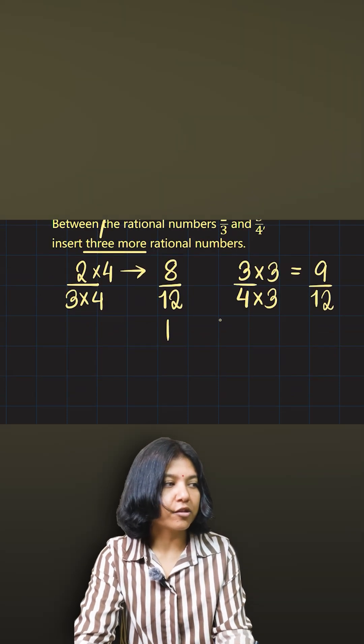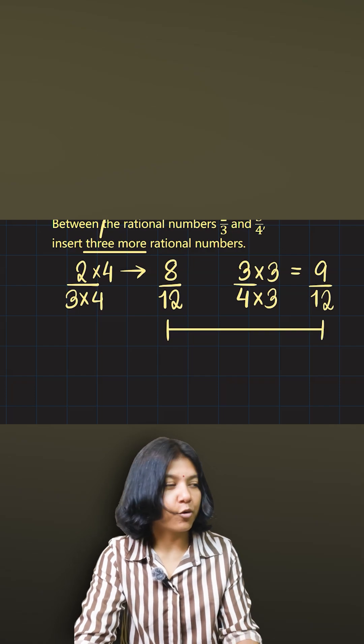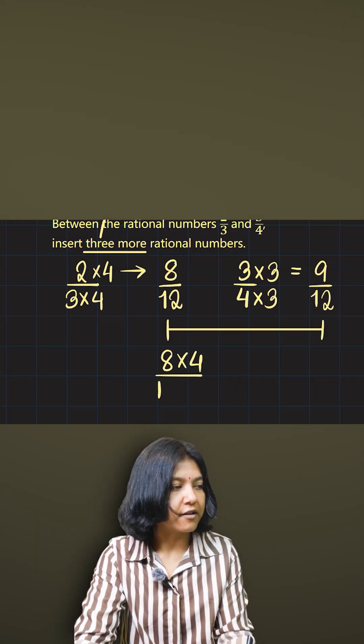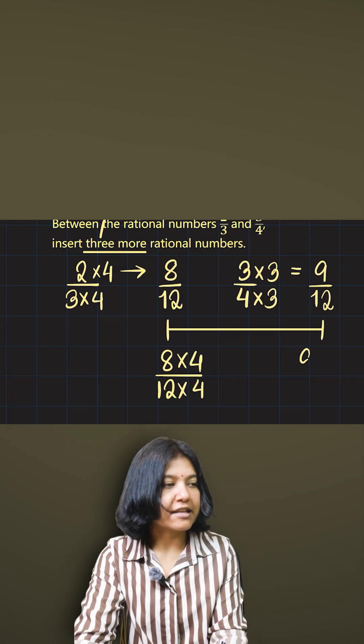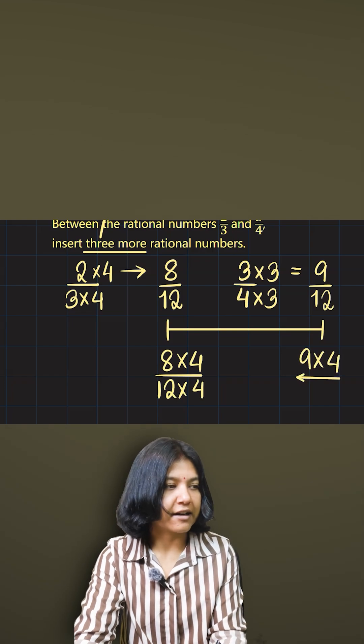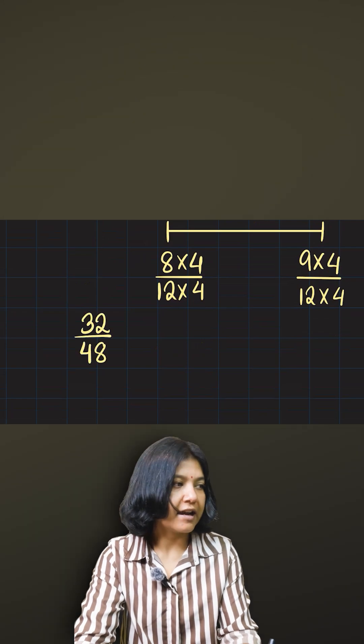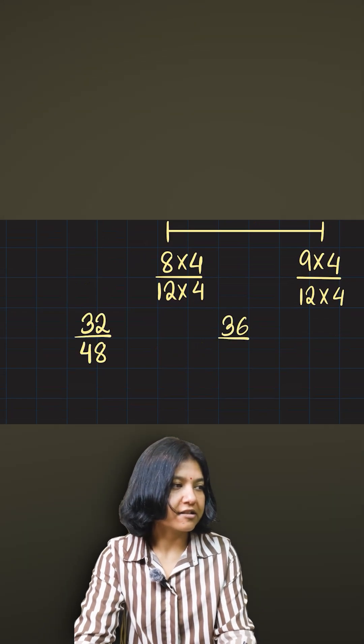Now I'm going to multiply both of them by four. I'll multiply both numerator and denominator by four. So 8 times 4 and 12 times 4. I'll do the same thing: 9 times 4, and the same thing at the bottom, 12 times 4.